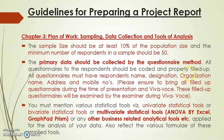Guidelines for preparing the plan of work — sample, data collection and tool of analysis: sample size should be at least 10% of the population size, and the minimum number of respondents in a sample should be 50. Suppose you are going for primary data like a questionnaire and asking questions to respondents — minimum at least 500 respondents should be there, and 10% of it you will use for calculation. Keep records of name, designation, organization name, address and mobile number, as these should be produced in front of your examiners during presentation. You must mention various statistical tools — like univariate, bivariate or multivariate statistical tools such as ANOVA by Excel, GraphPad Prism, or any other business-related analytical tool — applied for the analysis of your data. Also reflect the various formulae of these applied tools.